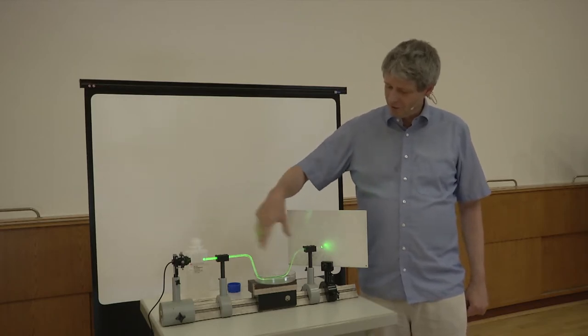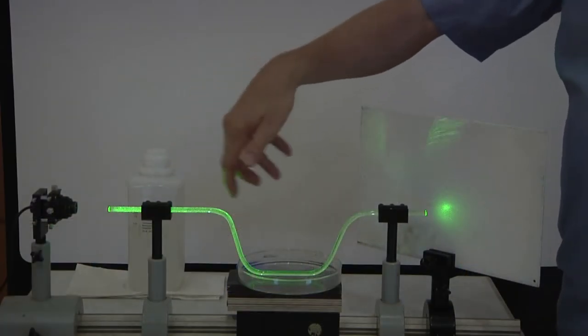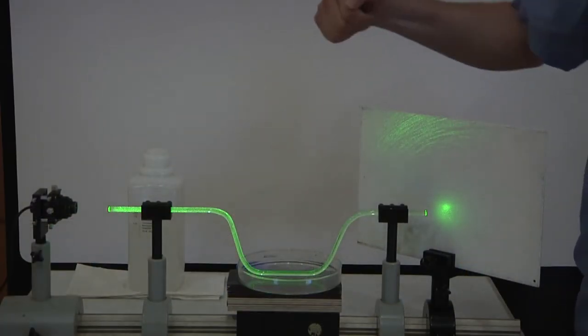Of course, the fact that you see green light everywhere is because it is a bad quality fiber, and so it scatters everywhere and that light goes out to you.